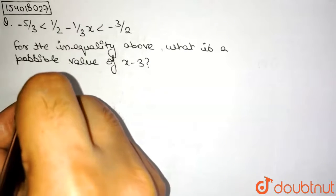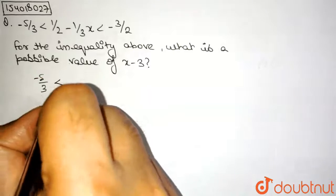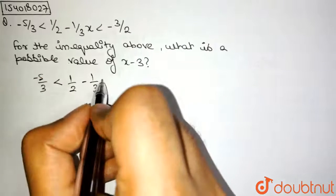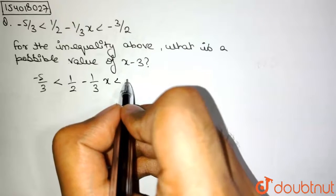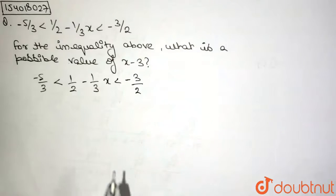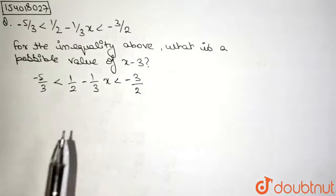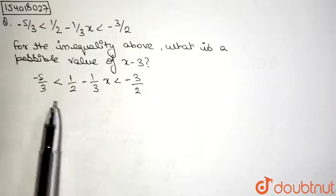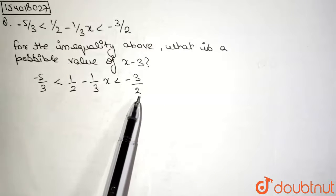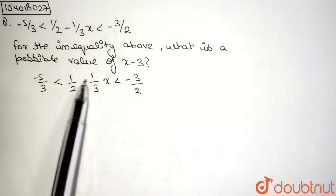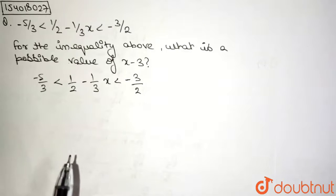Minus 5 by 3 is less than 1 by 2 minus 1 by 3 x, which is less than minus 3 by 2. Now let us multiply this entire thing by 6, because I can see that an LCM for the denominators is 6, because we can see 2 and 3. If we multiply this term by 6, then the fractional part gets cancelled out for every term and what remains is simply integral parts. So the calculation becomes much easier.